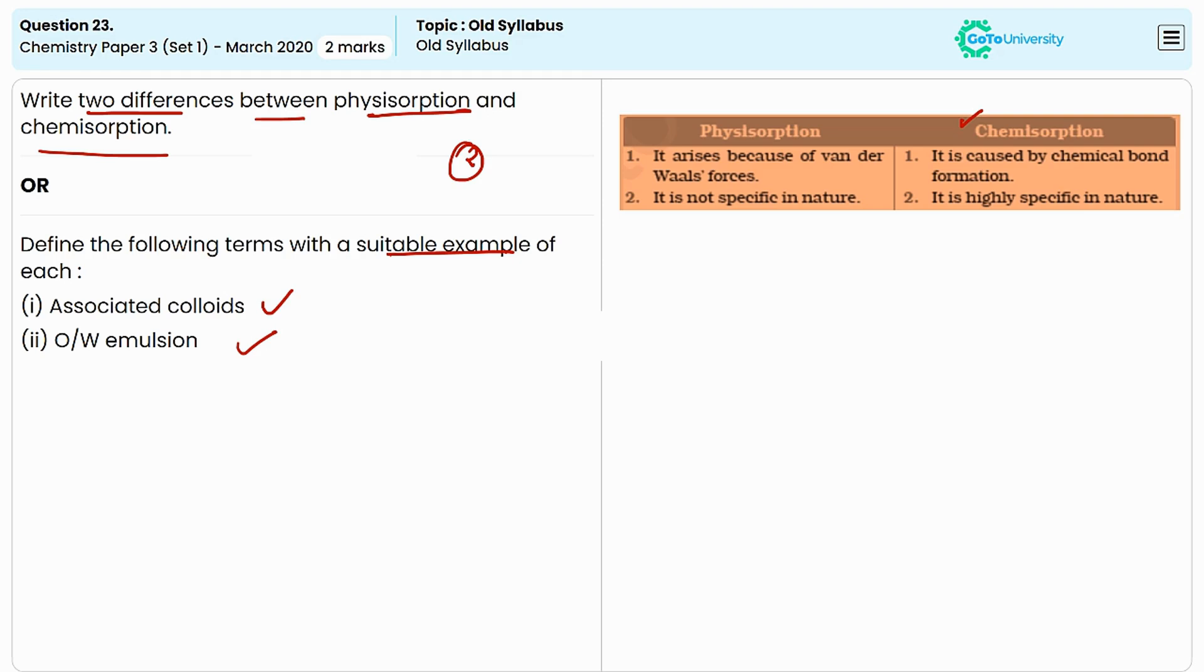For example, lecithin, sodium stearoyl lactylate, and polysorbates. The surfactants have hydrophilic and hydrophobic parts and arrange themselves at the oil-water interface, preventing the oil droplets from coalescing.